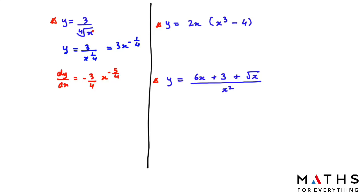For the next question, there is a bracket — expand and simplify first. 2x times x cubed: using the indices rule, 1 + 3 = 4, giving 2x to the power of 4. And 2x times negative 4 gives negative 8x. Now differentiate: 2 × 4 = 8, so 8x cubed; and negative 8x differentiates to negative 8.